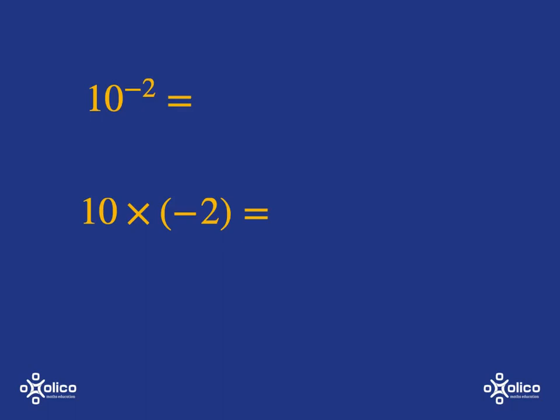10 to the power of negative 2: when there's a negative in the exponent, it doesn't make the number negative. It simply tells you to go 1 over the number. So it's 1 over 10², and 10² is 100. So 10 to the negative 2 is 1 over 100. In contrast, 10 multiplied by negative 2 is negative 20.